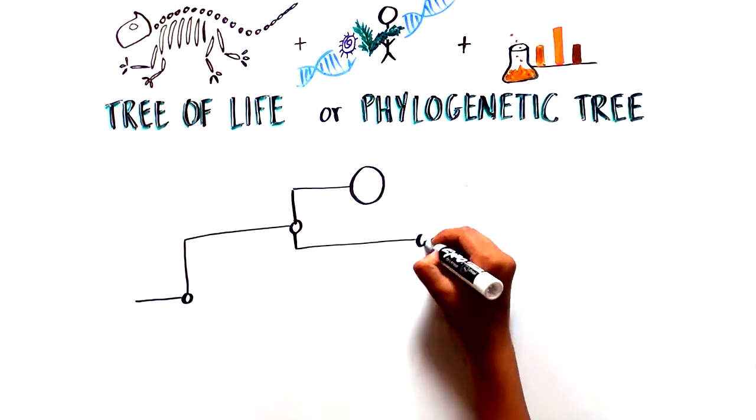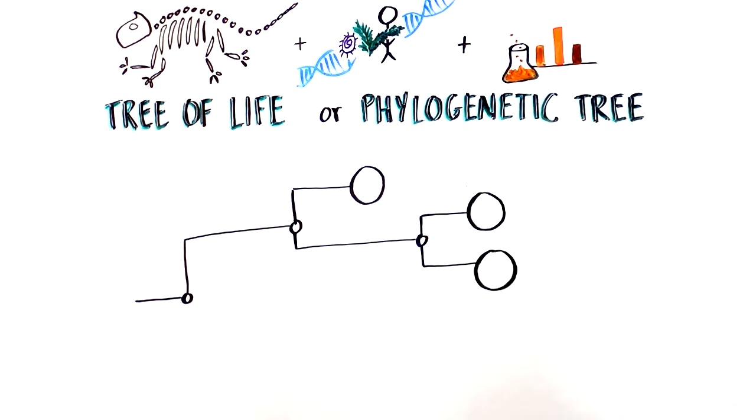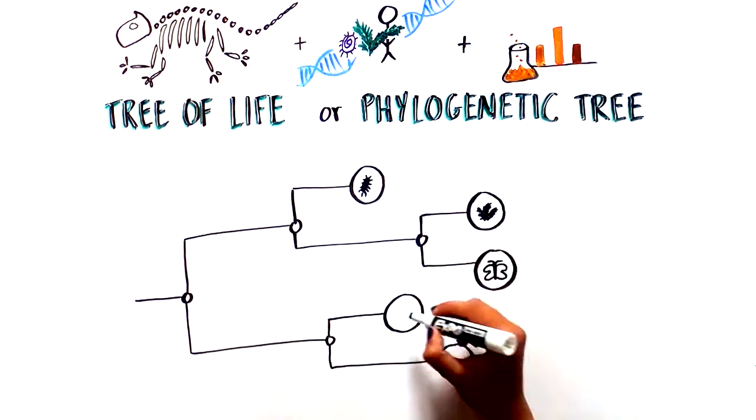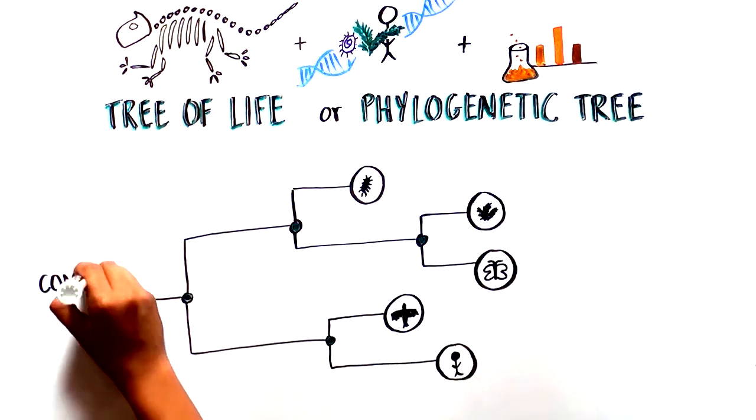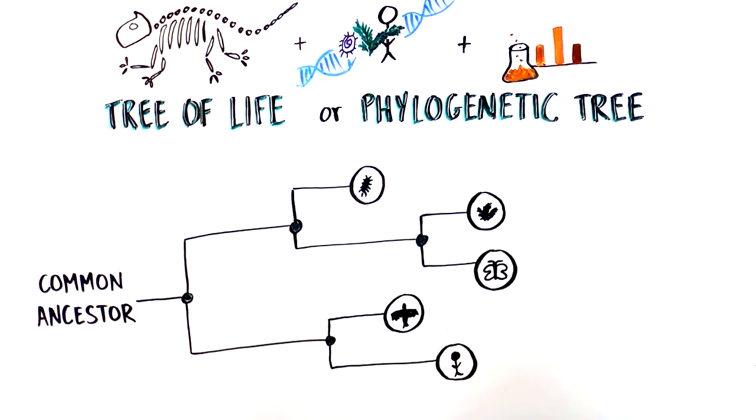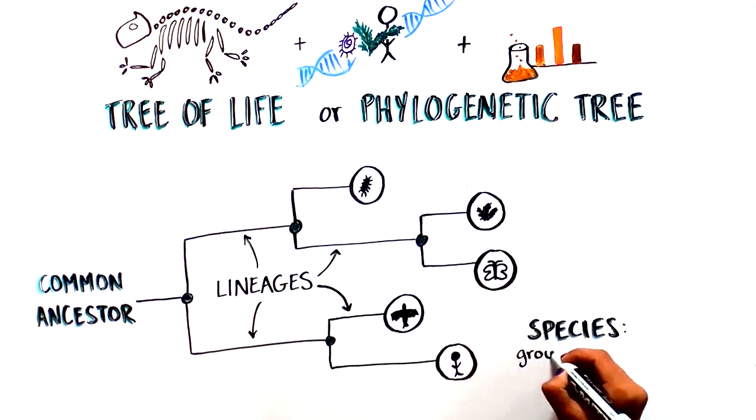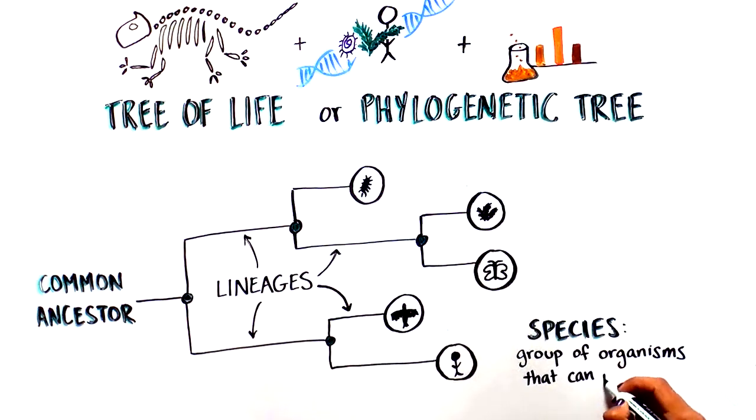The tree of life was constructed based on evidence from fossils, the genetic makeup of different organisms, and a wide range of scientific experiments. On the tree stemming from the common ancestor, different lines represent the organisms, and nodes show where two or more groups diverge from each other, forming multiple distinct species.